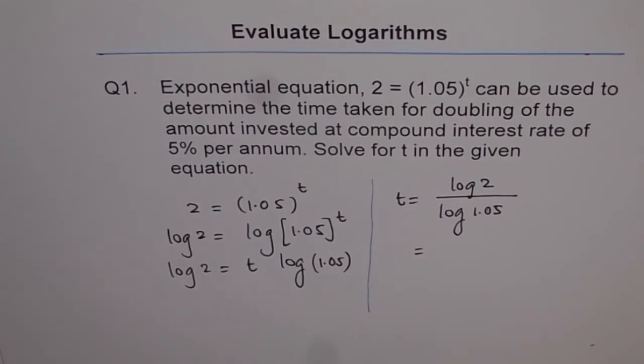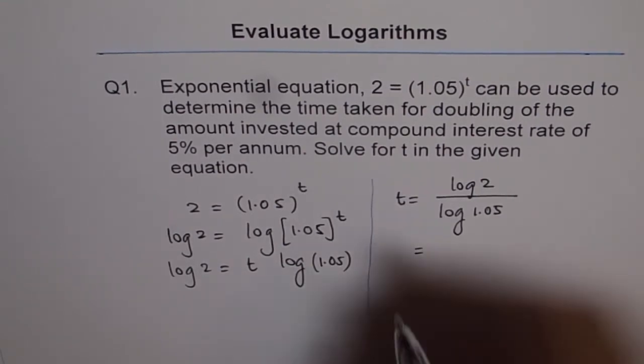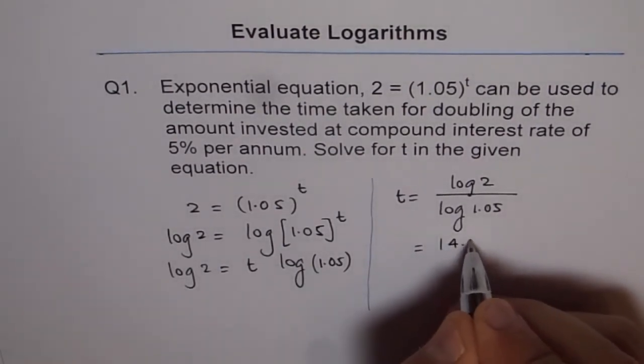So we get log 2 divided by log 1.05, which gives us 14.20.